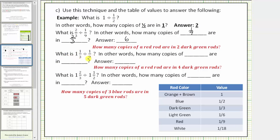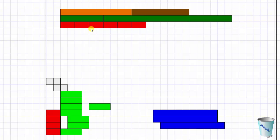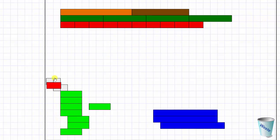Next, what is one and one third divided by one ninth? How many copies of one ninth are in one and one third? Using the rods, we ask how many red rods are in four dark green rods — since one dark green rod equals one third, three dark green rods equal one, and four dark green rods equal one and one third. We already know six red rods fit in two dark green rods, so twelve red rods fit in four dark green rods. This tells us there are twelve one-ninths in one and one third.